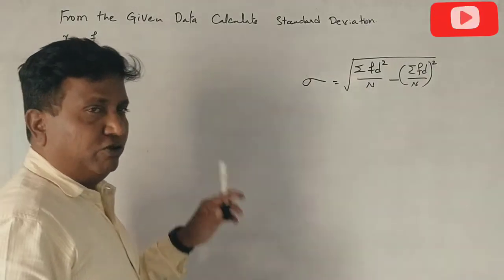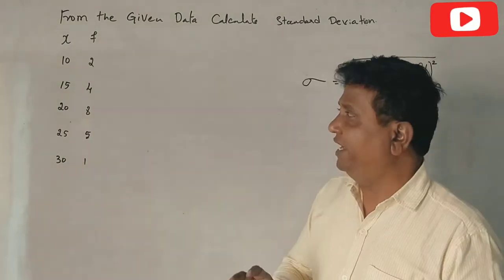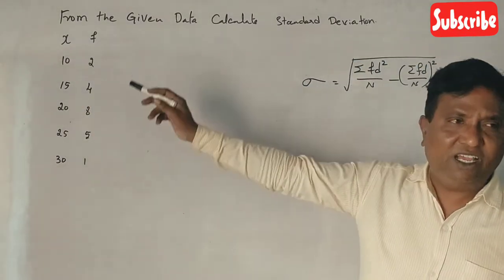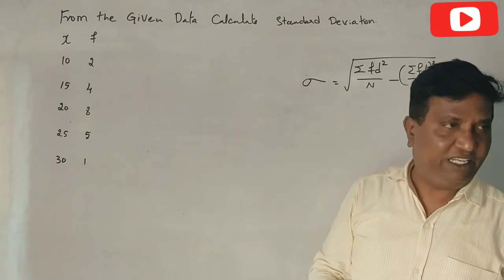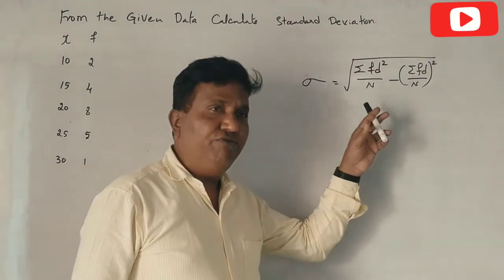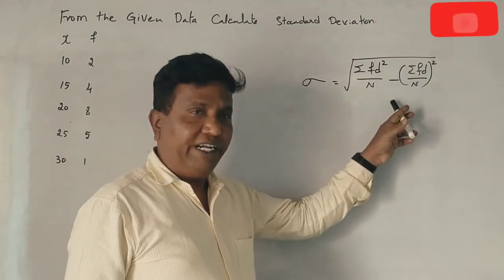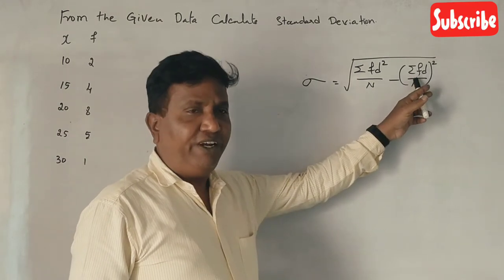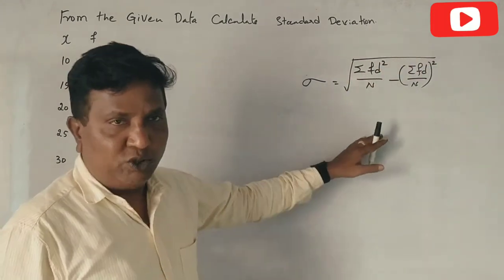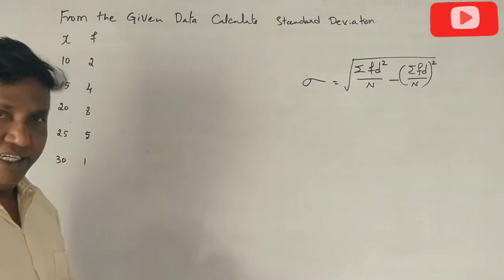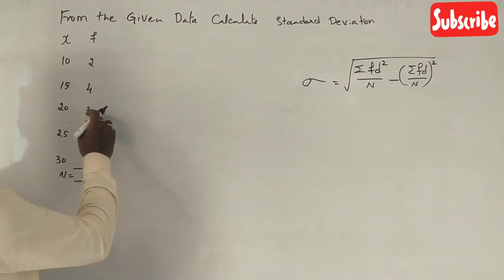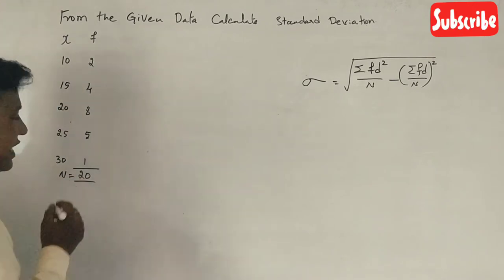Here is a standard deviation question. This question is a discrete series. The standard deviation formula is: summation fd squared divided by n, minus summation fd divided by n, whole square, whole root.